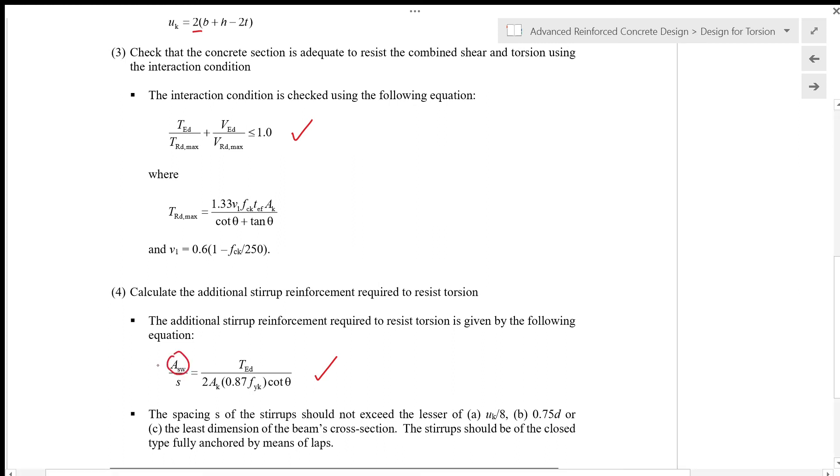This ASW is different from the one in shear link design. The ASW here refers to only one cross section of the vertical leg, whereas in the design for shear the ASW refers to two times the cross section of the shear links.